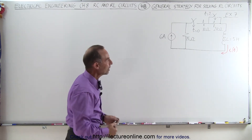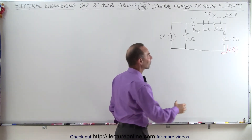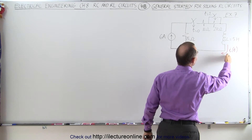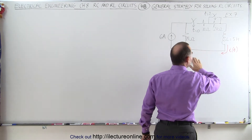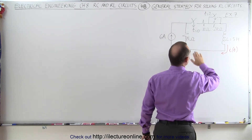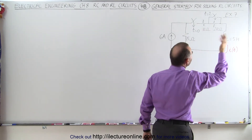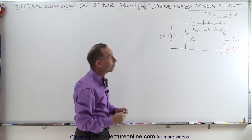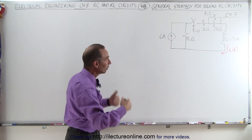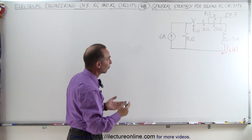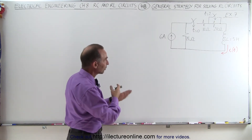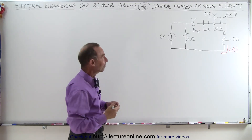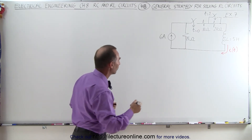Things are a little bit different here. We're trying to find the current through the inductor starting at time equals zero, through time equals two, and then beyond. So again, we're going to have to do this in two stages: first between time equals zero to two, and then for time after two seconds.